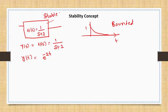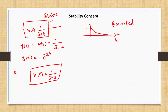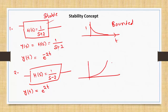For a second case, take H(s) = 1/(s-2). The inverse Laplace transform of H(s) is e^(2t). Plotting e^(2t), the output grows without bound — it is unbounded. Therefore, I conclude that this system is unstable.